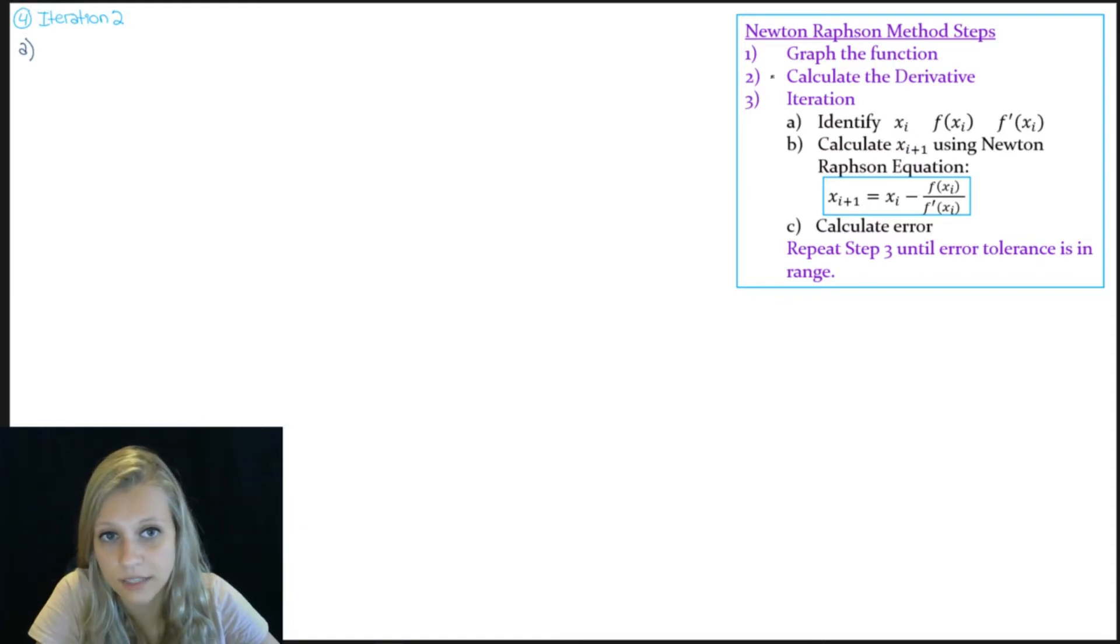So in this case, x of i is going to be x of 1, which is 1.19231. And then we need to determine function value and the derivative value. The function value is 4.4980. And the derivative value is 20.45272.